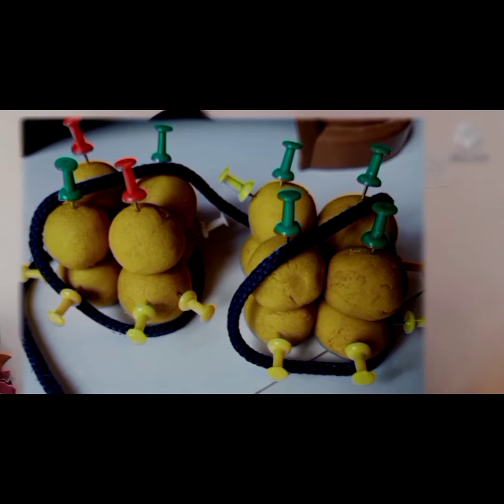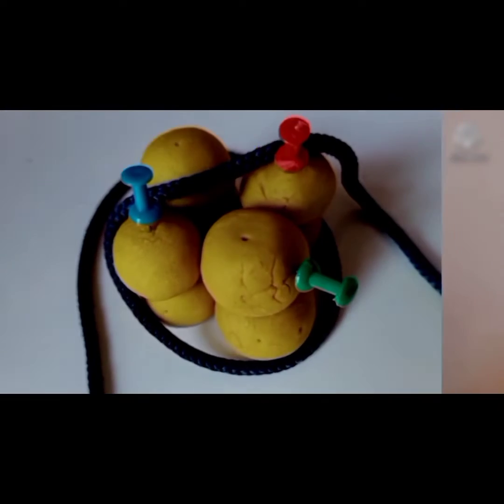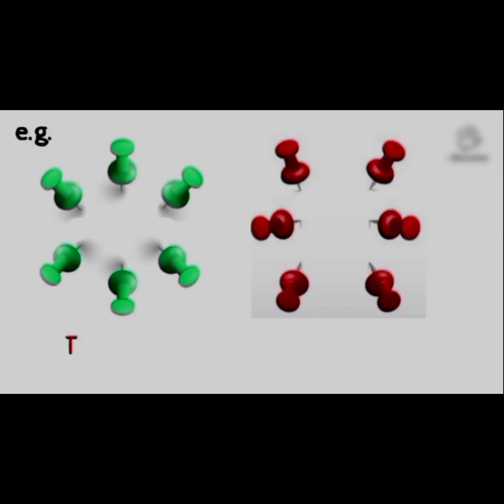When the packaging is tight, DNA cannot send a message and form proteins. When the packaging is loose, DNA can send a message and form proteins. But what decides loose or tight? The number and type of molecules that bind to the histones. These marks will loosen or tighten the packaging according to their number and type — and you can call them epigenetic marks.